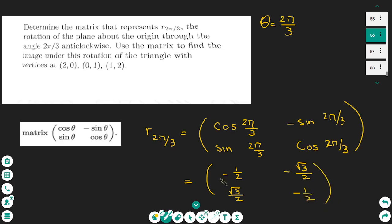This is the matrix that we are going to use to do a rotation with an angle anticlockwise 2π/3. To complete the exercise, we need to use this matrix and multiply by the vertices of the triangle.